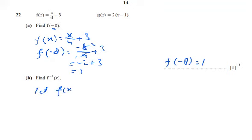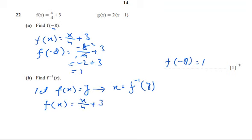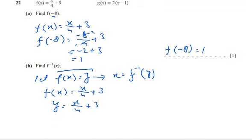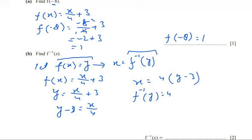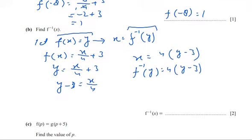We have to find f inverse of x. So we let f(x) equal to y, and x will be f inverse of y. f(x) is given as x/4 + 3, and we supposed f(x) = y, so x/4 + 3 = y. Therefore y - 3 = x/4, or x = 4(y - 3). Since x = f inverse of y, we write f inverse of y = 4(y - 3).